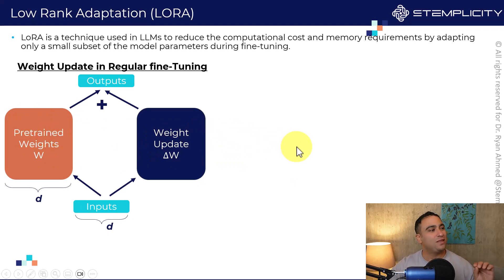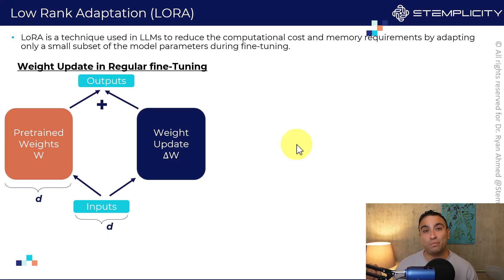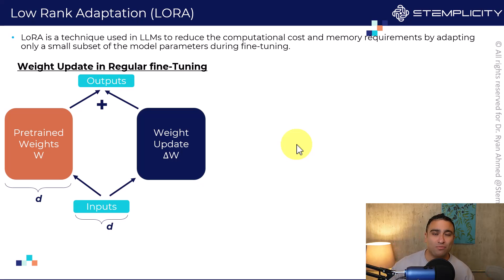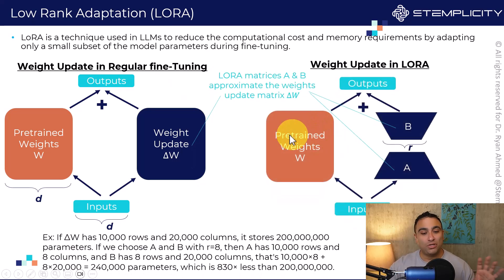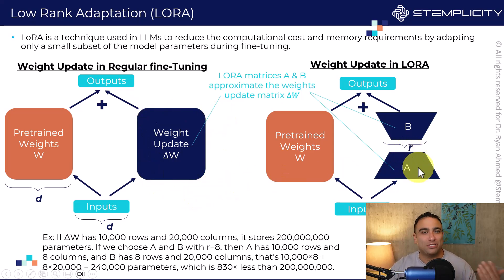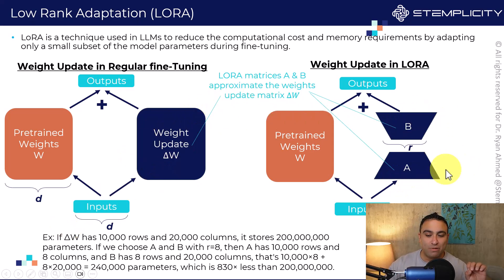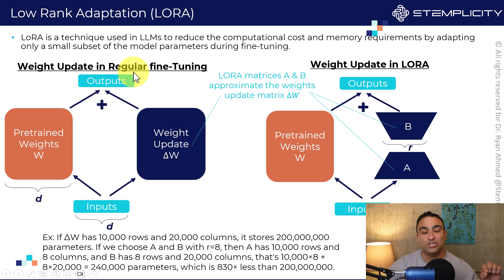Instead of doing that, we implement a technique known as LoRA. Think of it as reducing the amount of compute power and matrix size, and of course reducing memory requirements by leveraging this technique. What we do is take this weight update matrix delta W and break it down into two matrices — matrix A and matrix B — and these two matrices simply approximate the values of the weights we would get with regular fine-tuning.